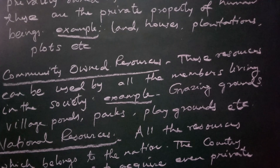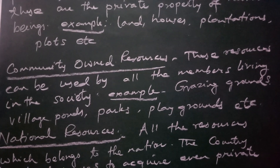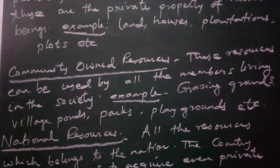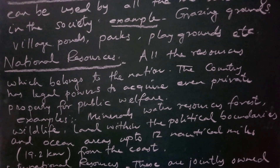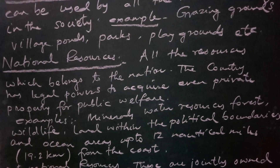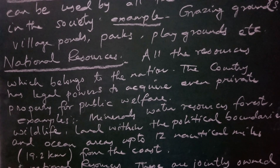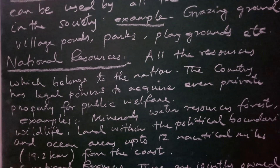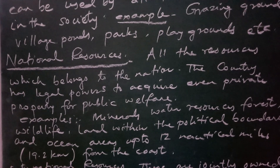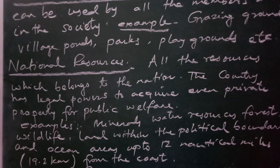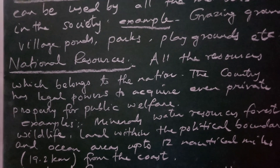Community-owned resources are those that can be used by all the members living in the society, for example grazing grounds, village ponds, parks, playgrounds, etc. All people living in a society have the right to use them. National resources are all resources which belong to the nation. The country has legal power to acquire even private property for public welfare — such as when the government takes land from farmers to build canals, dams or roads.